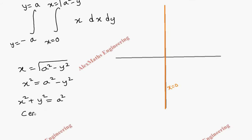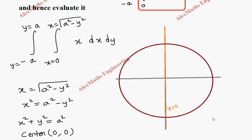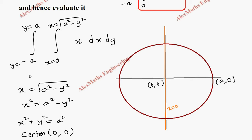So x squared plus y squared equals a squared. This is a circle with center at the origin — center is (0, 0) and radius equals a. We draw the circle with center at origin and radius a. This is (0,0) and this is (a, 0). The limit of y is from minus a to a, so this point is (0, minus a) and this point is (0, a).